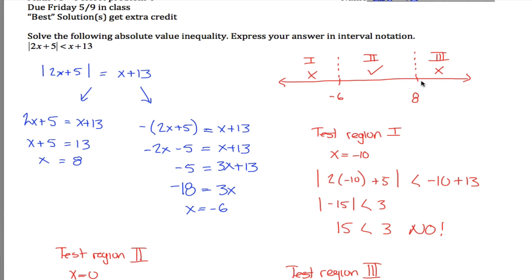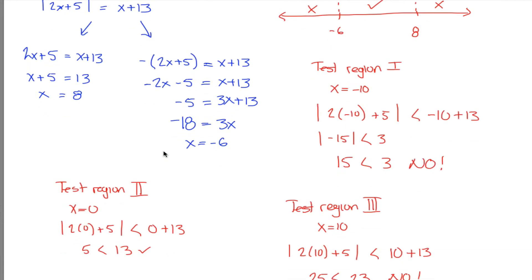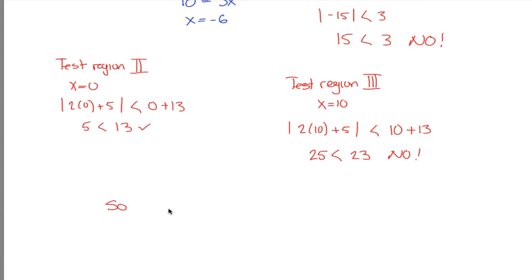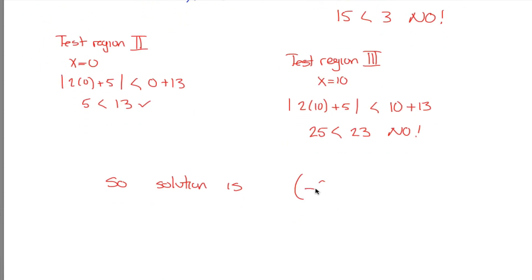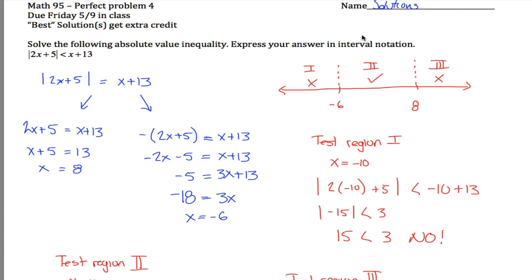Do you want to include those endpoints, negative 6 and 8? No, because this says less than, not less than or equals to. So solution is all the numbers from negative 6 up to positive 8, but not including those two endpoints. There you go. That's how you solve an absolute value inequality.